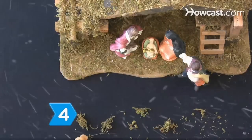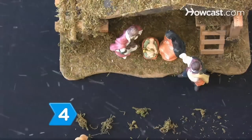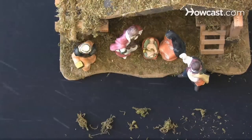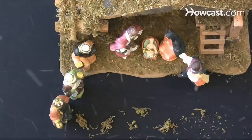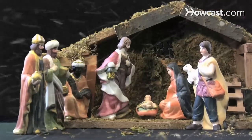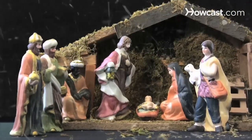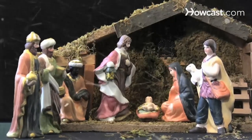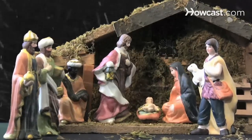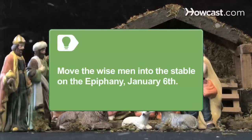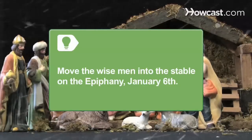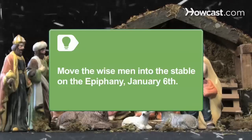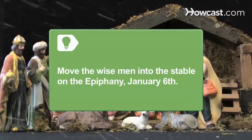Step 4. Set the shepherds and the wise men in concentric circles around the stable. As the wise men were thought to be the last to arrive, put them the furthest away in the nativity scene. Move the wise men into the stable on the Epiphany, on January 6th. This is celebrated as the day the wise men reached the Christ child.